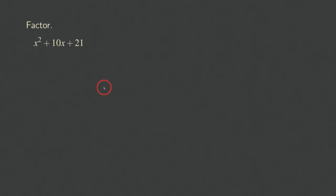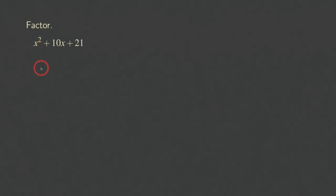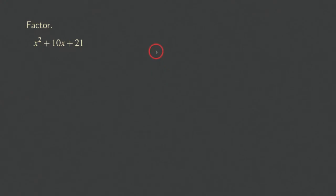You may say we can use negative one and negative one — they multiply to positive one. But to keep things simple, if this number is positive, we just want to use the two positive numbers that multiply to one. So the only combination is one and one. We write down the two terms that will multiply to give us X squared: one X and one X.